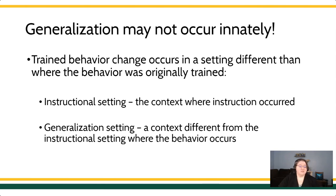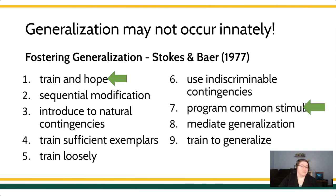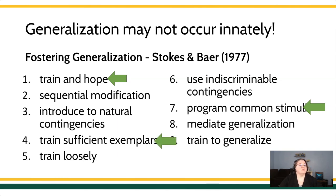Way back, about 45 years ago, there was an article by Stokes and Bayer where they talked about many different ways you could use to promote generalization. We're actually going to talk about only a few today. We're going to talk about train and hope, programming common stimuli, and training sufficient examples. These are the three covered by Miller in his textbook. But if you come back and take Psych 400, Strategies of Behavior Change, we will talk about all nine different strategies to promote generalization.